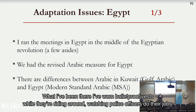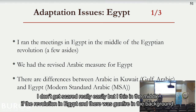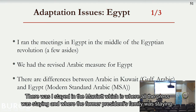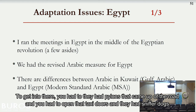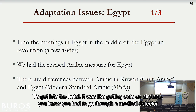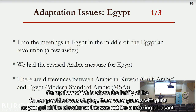I stayed in the Marriott in Cairo, which is where all the press was staying and where the former president's family was staying. To get in, you had to open taxi doors with pylons coming up out of the road, sniffer dogs checked the car, and getting into the hotel was like getting onto an airplane — you went through a metal detector. On my floor, where the former president's family was staying, there were guards with guns as you got off the elevator. I actually had a view of the Nile from my room and didn't want to leave.